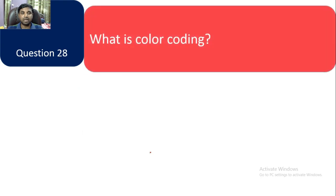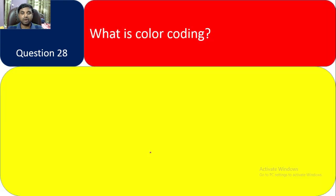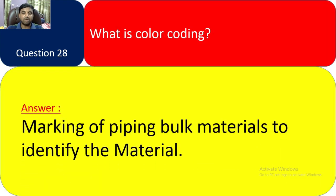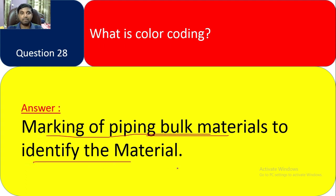Question 28: What is color coding? Color coding is the marking of piping bulk material to identify the material type.